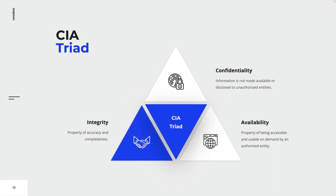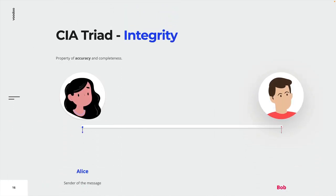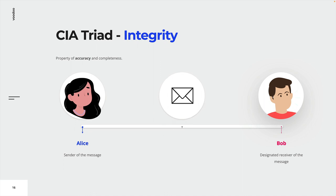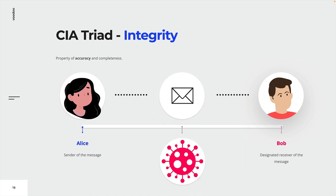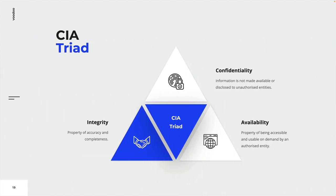The second security objective is integrity. Integrity is defined as the property of accuracy and completeness. Again, let's assume Alice wants to send another message to Bob. Just like before, an attacker is able to gain access to this message. We already know that this is a violation of confidentiality, but this time the attacker does not only read the message — the attacker also changes the content of the message and therefore violates its integrity. Bob will not receive the initial message from Alice; instead, he receives an altered message without even knowing so. The initial message is no longer accurate or complete. This is integrity.